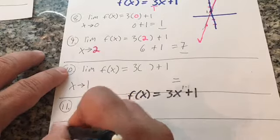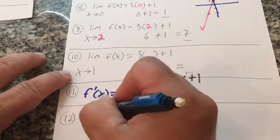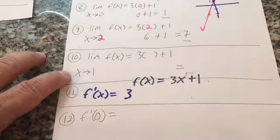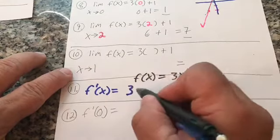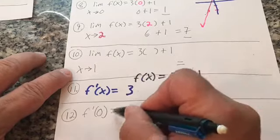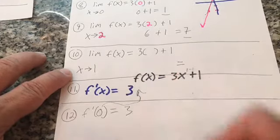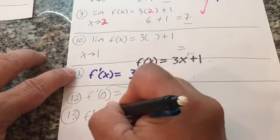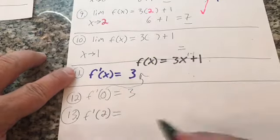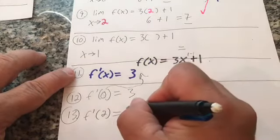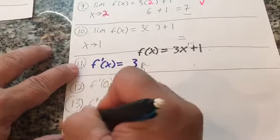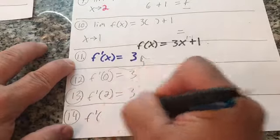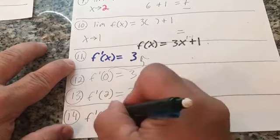Number twelve: find f prime of zero. I take zero and plug in for x, but there's no x in the derivative — I'm confused. So the answer is just three. For number thirteen, f prime of two: again there's no place to plug the two in, so the slope is three. Number fourteen: what's the slope at x equals negative 25? I'll leave that for you to do on your own.